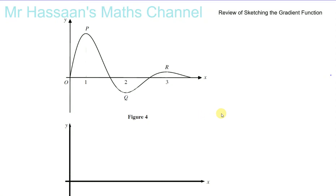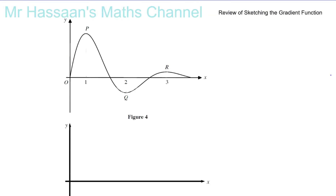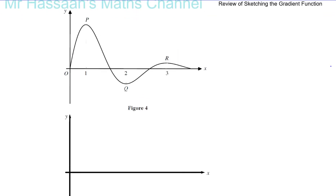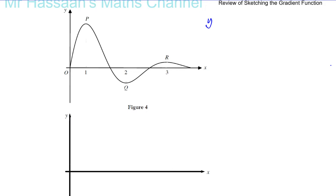One of the things I had mentioned I will try to do is make a short review of sketching the gradient function, showing a few more examples. Here I've got an example — a graph y equals f of x. We don't know what the function is, and we want to draw y equals f dash of x on this second axis.